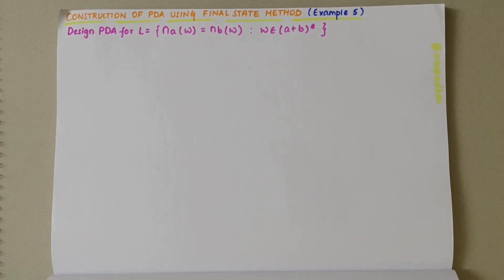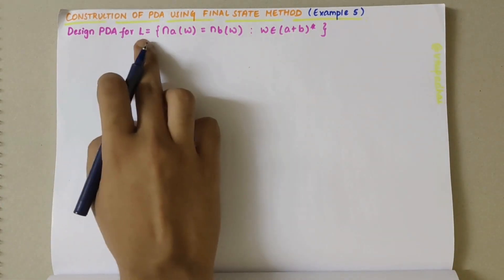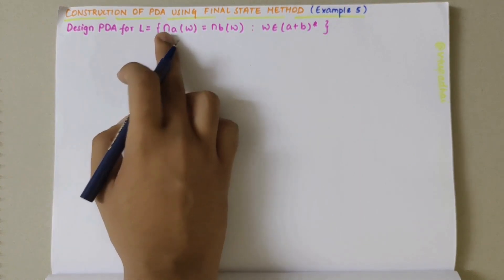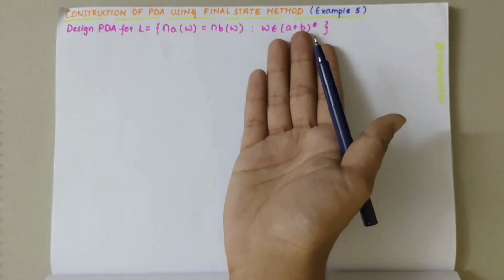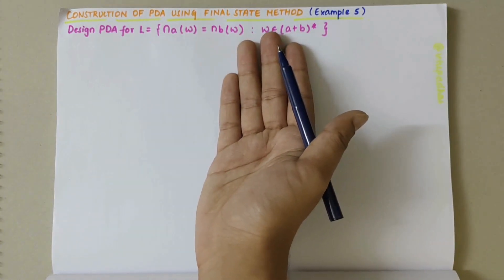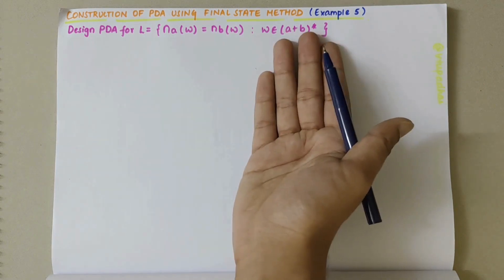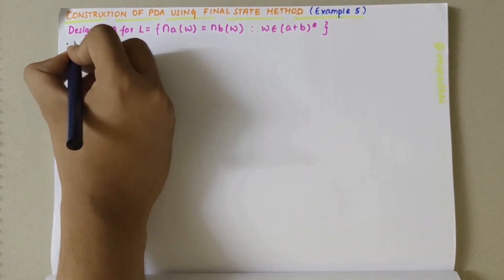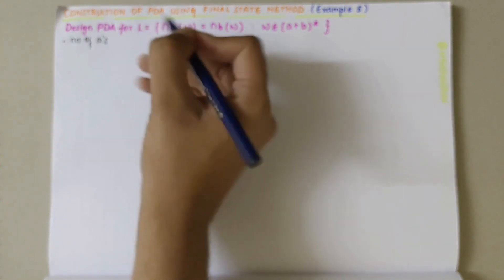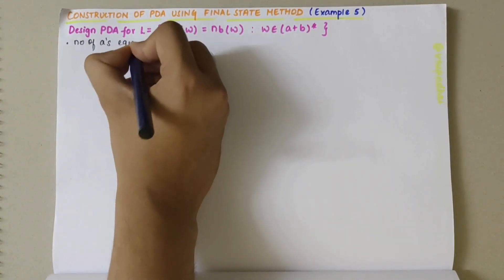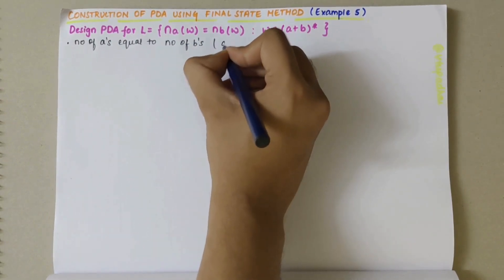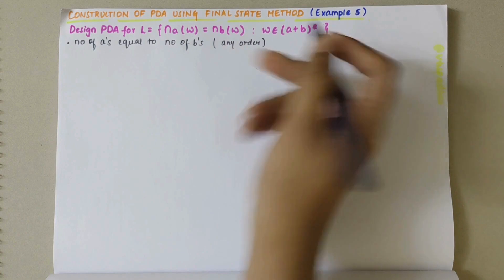In this video we will be looking into construction of PDA using the final state method. This is the fifth example. We need to design a PDA for the given language where the number of A's should be equal to the number of B's. The alphabets can be any number of A's or B's, or a combination of those, or lambda. The strings could be of any order.